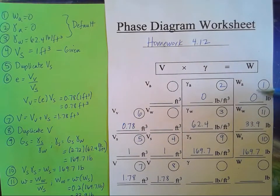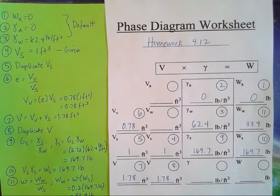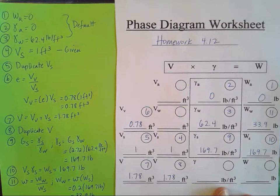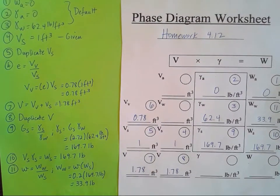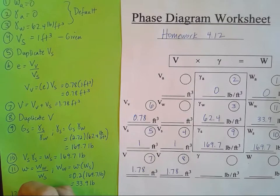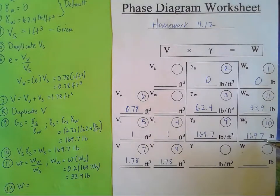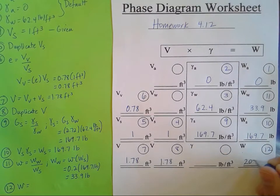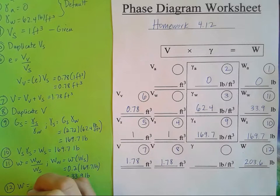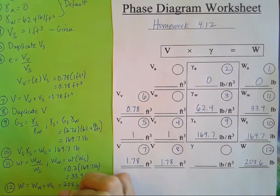I'll always round weights and gammas to the tenth place, and volumes to the hundredth place — that's the standard we're adopting so everyone has similar answers. For number twelve, the total weight is just the weight of water plus weight of solids: 33.9 plus 169.7 equals 203.6 pounds, since weight of air is always zero.